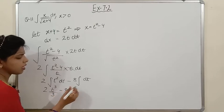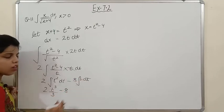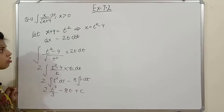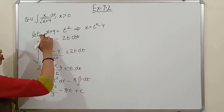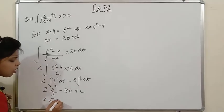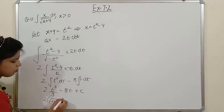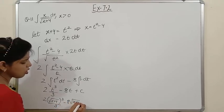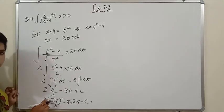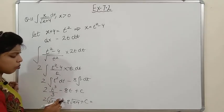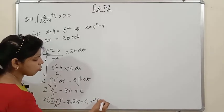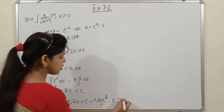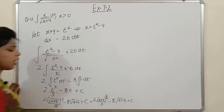So we get 2·(t³/3) − 8t + c. Now substitute back: t = √(x+4). The answer becomes (2/3)·(x+4)^(3/2) − 8√(x+4) + c. Note that √(x+4) raised to the cube gives (x+4)^(3/2) because the square root is power 1/2, and 1/2 × 3 = 3/2. Please note this down.